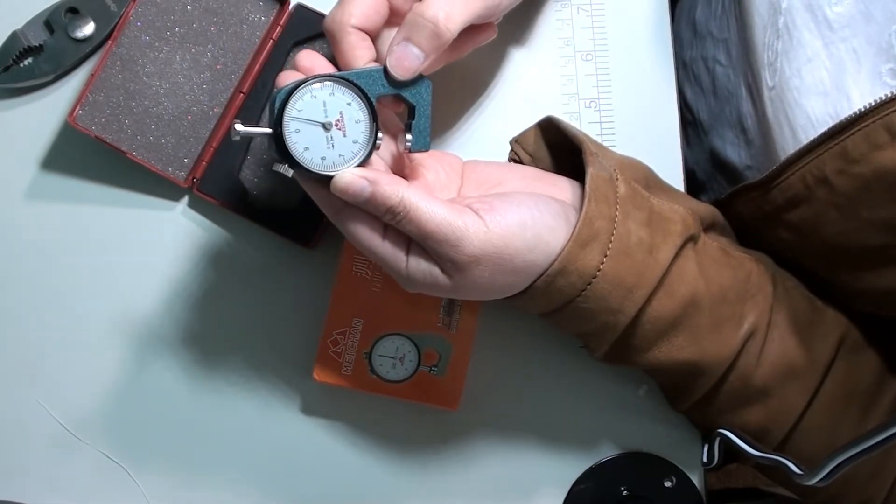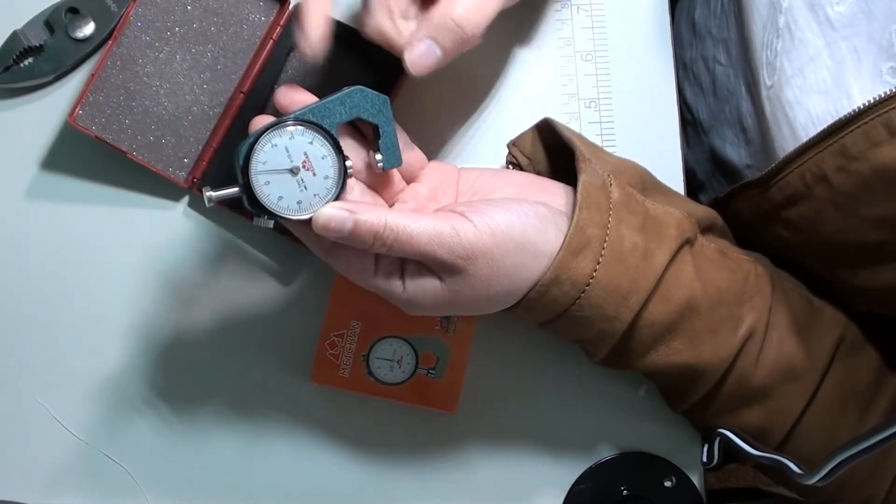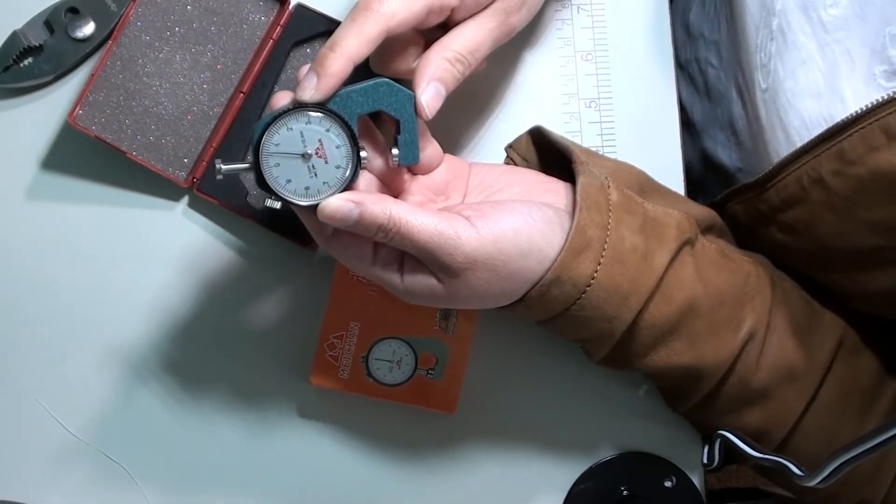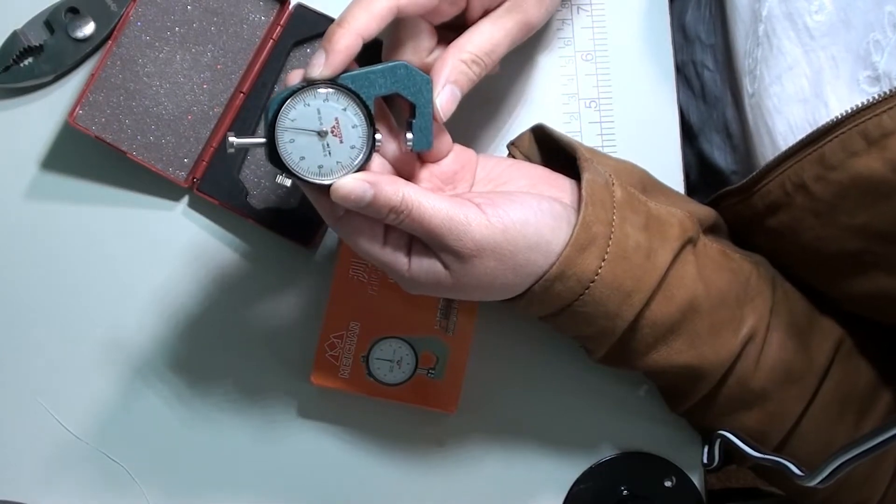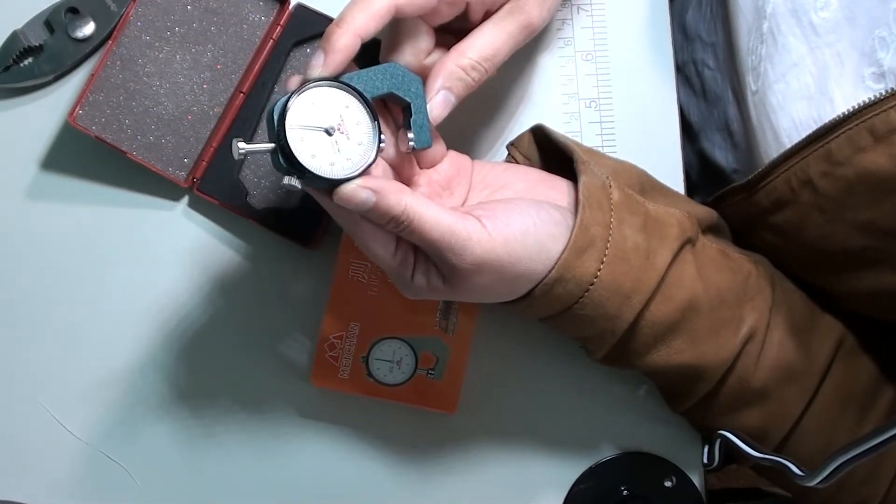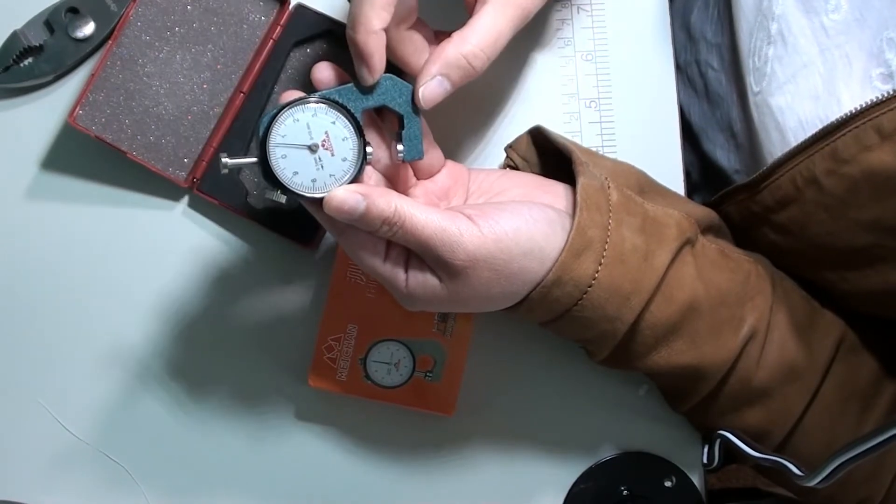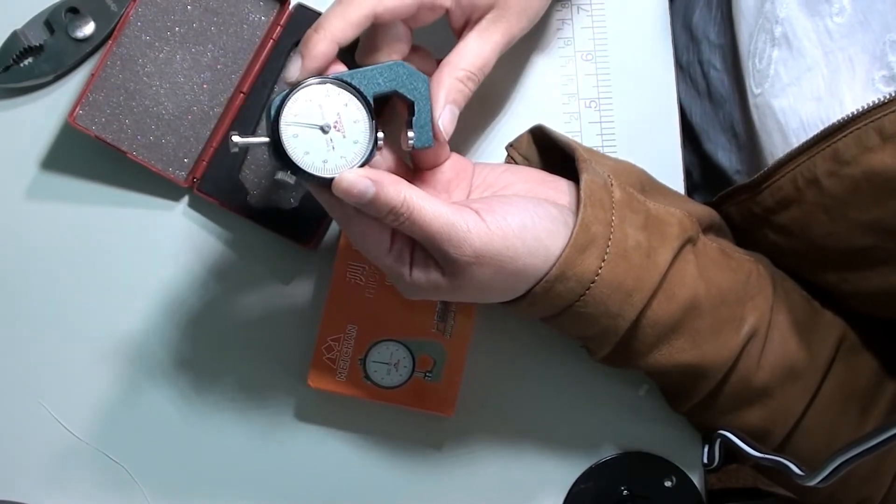What happened to my little gauge is I dropped it. It didn't take much to mess up the calibration. I was reading the reviews and many people say that once you drop it, they couldn't figure out how to recalibrate it.